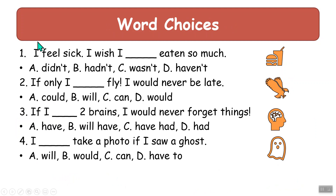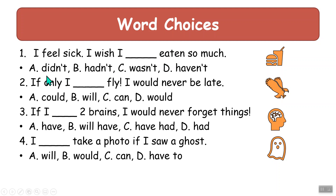Here are some more examples of multiple choice — very typical. There's grammar from last week's lesson. 'I feel sick. I wish I ___ eaten so much.' This is similar to a conditional sentence. With wish, it's not really conditional but it's similar. So — what can we put before eaten? It's the third form.